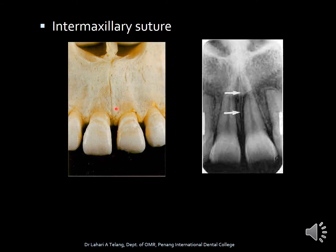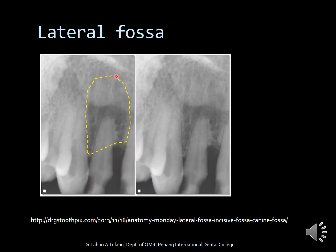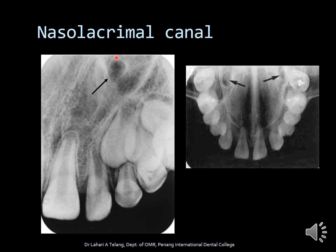The intermaxillary suture is where the two halves of the maxilla join in the center, and it appears as a radiolucent line on the anterior maxillary radiograph. The lateral fossa is a small depression seen in the lateral incisor area, generally visible because there is less density of bone near the lateral incisor, making it appear as a fossa. The nasolacrimal canal is very rarely seen on a canine radiograph but is highly placed and clearly evident on the occlusal view.